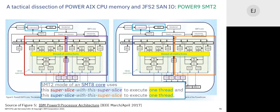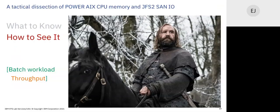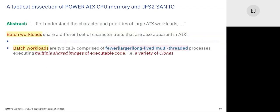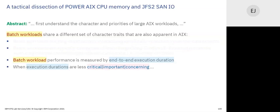Batch workloads and throughput. The main point of batch workloads: they don't care about responsiveness. Batch workloads are long duration, not interactive, periodically repeated — moving data, projects. They're usually comprised of larger, longer-lived, multi-threaded processes. Batch workload performance is measured by end-to-end execution duration with no concern for responsiveness. I believe our best practices are founded on the assumption of a batch workload.